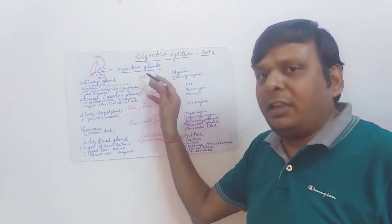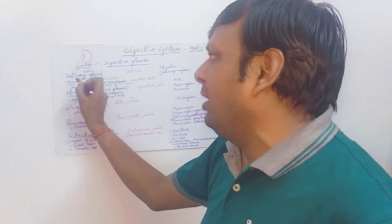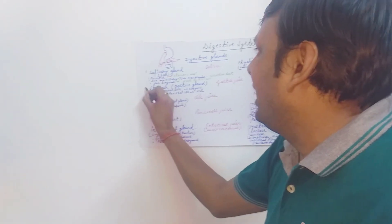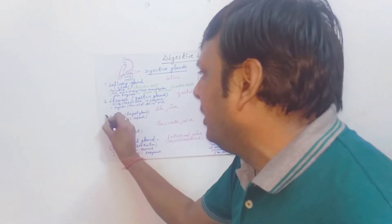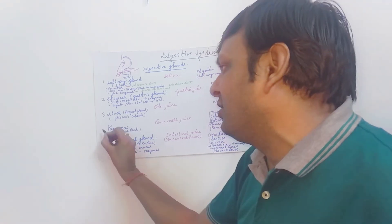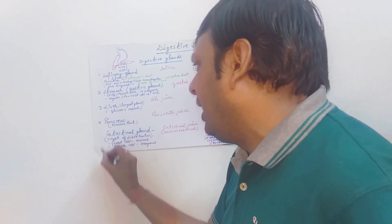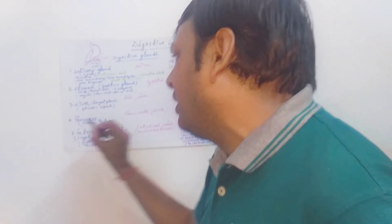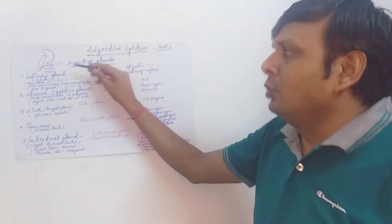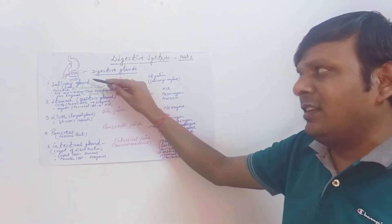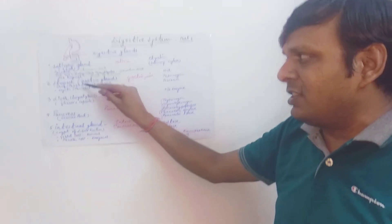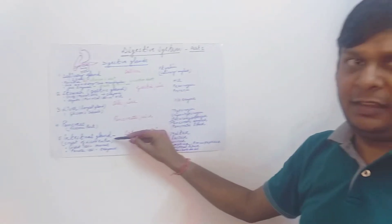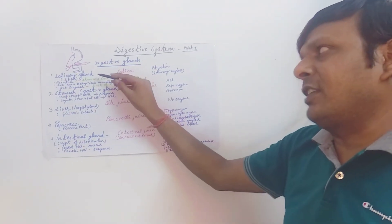The main digestive glands are: salivary glands, gastric glands located on the wall of the stomach, liver (a very important and the largest gland), pancreas, and intestinal glands present in the small intestine. These are the very important digestive glands of the human digestive system.